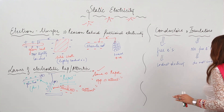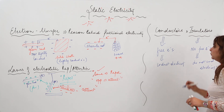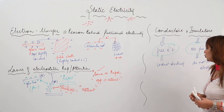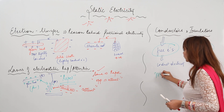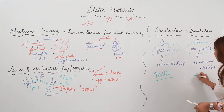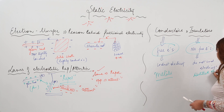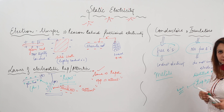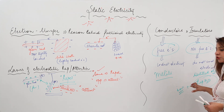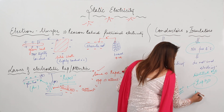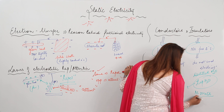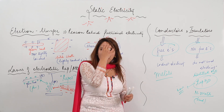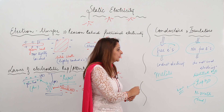The reason behind conduction of electricity is merely the presence or absence of free electrons. Most metals are conductors. Distilled water is a poor conductor, but tap water is a good conductor because it has many ions and impurities. Non-metals are bad conductors, but there are exceptions — like graphite and tap water — which are good conductors.